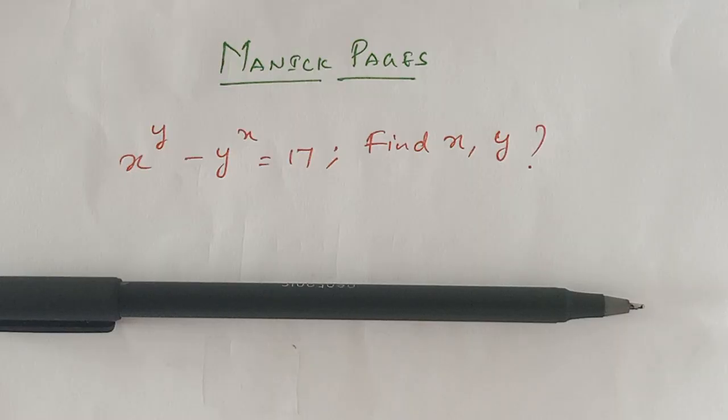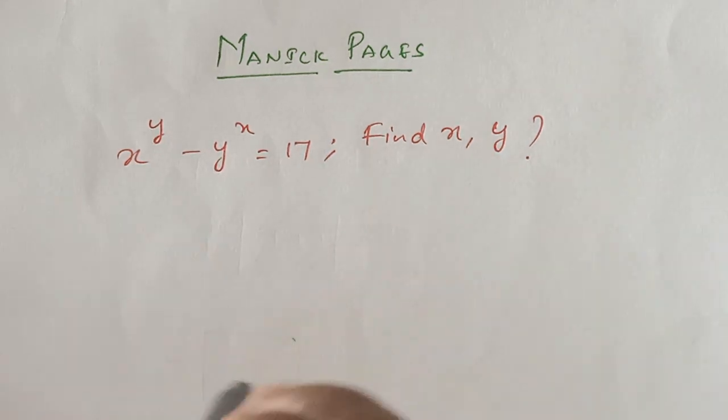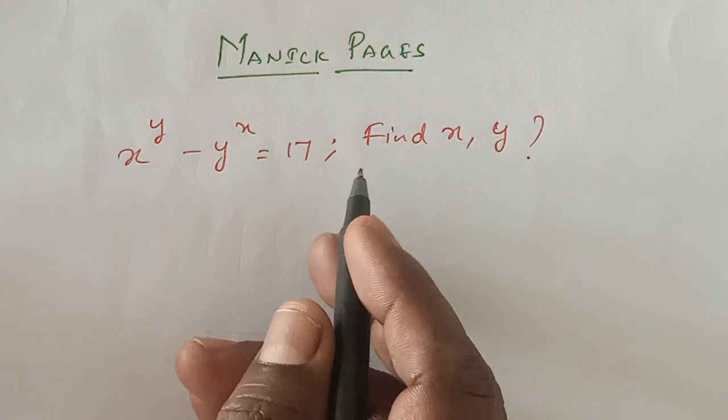Hello, welcome to Morning Pages. In today's page, an interesting problem: x^y - y^x = 17. Find x and y.